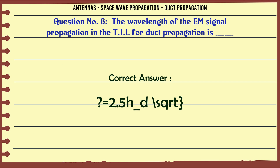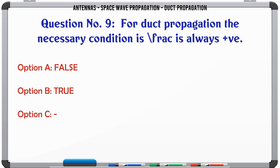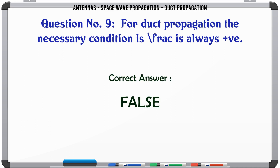For duct propagation, the necessary condition is 3.5 h_d / dh is always greater than or equal to V — true or false? A) False. B) True. The correct answer is false.